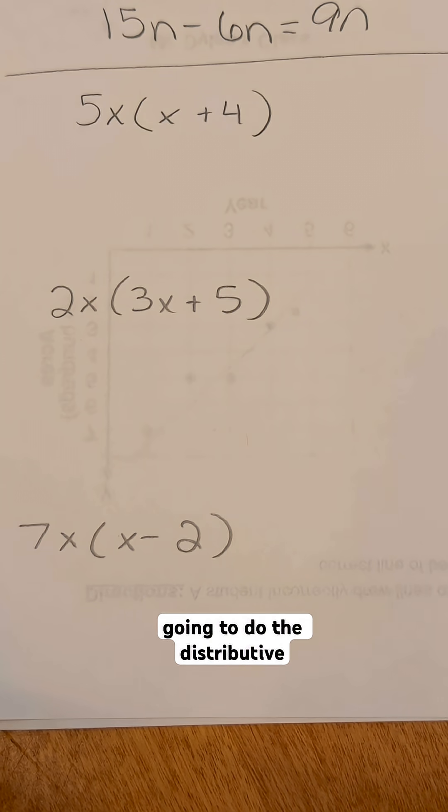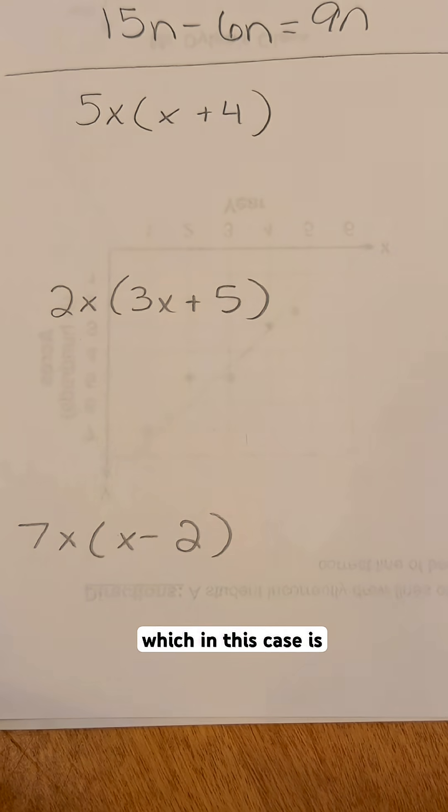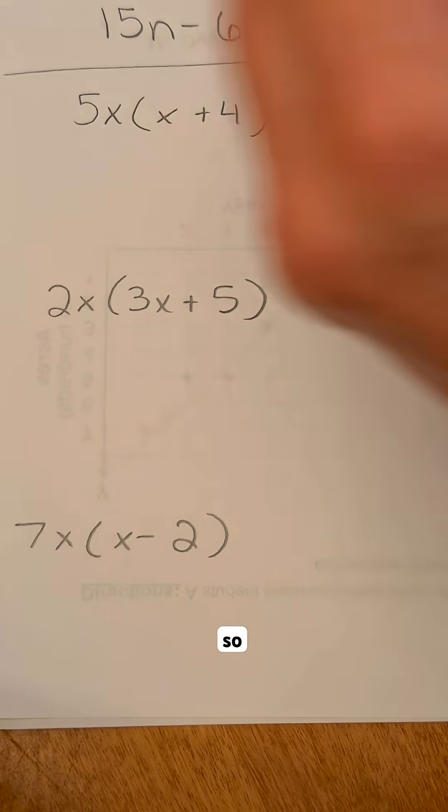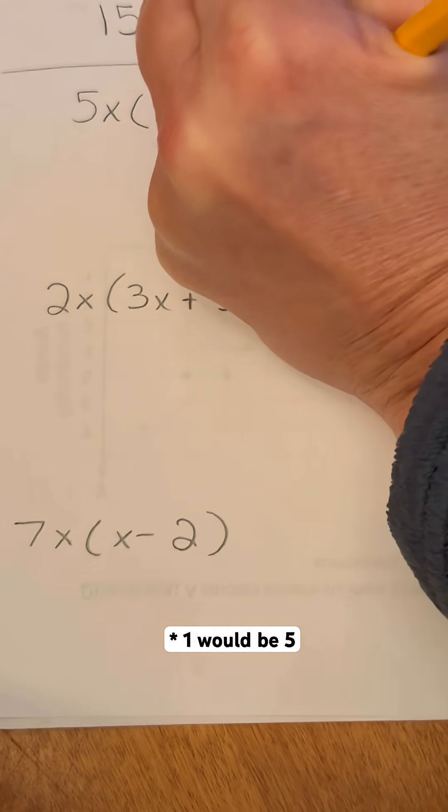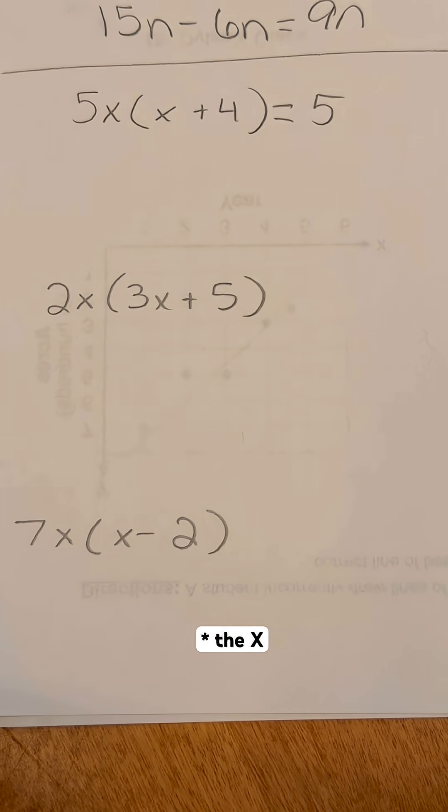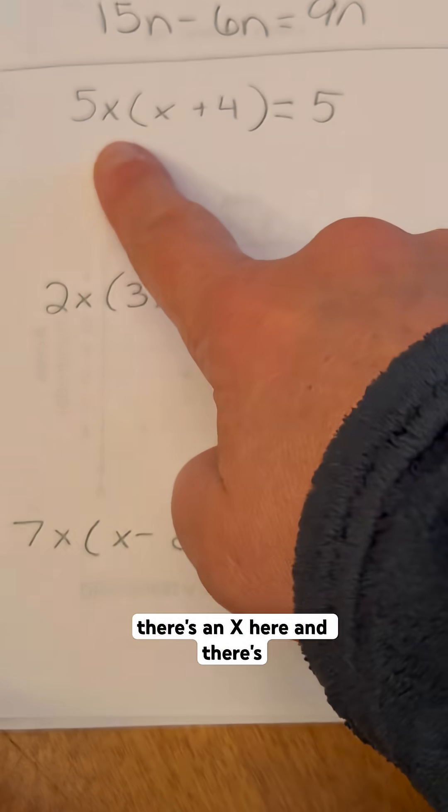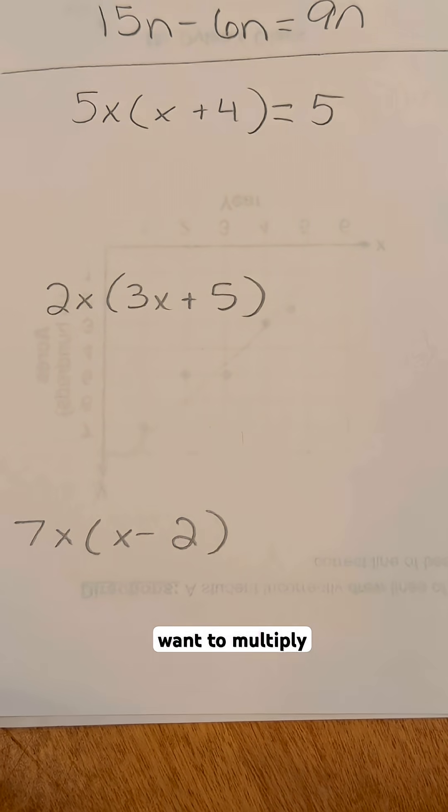On the first one we're just going to do the distributive property. We do five times the number in front of x, which in this case is just one. So five times one would be five, and then we do x times the x. Because there's an x here and there's an x here, we want to multiply those two things together. x times x is x squared.